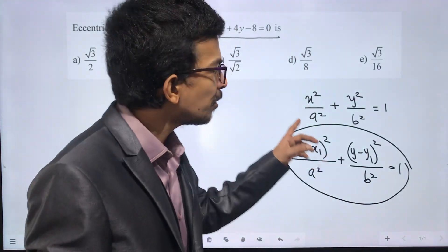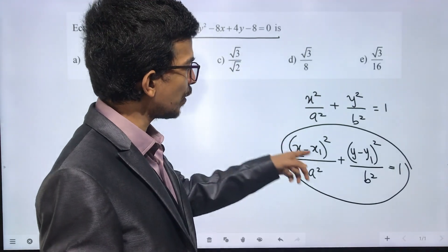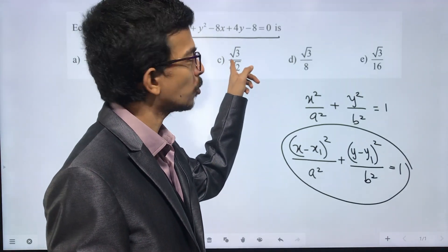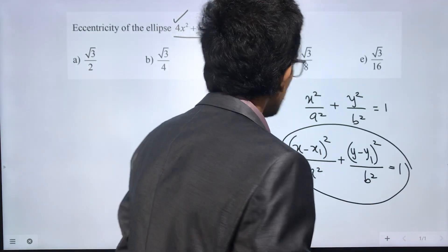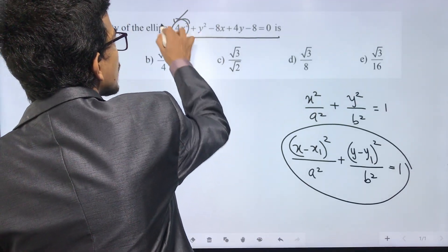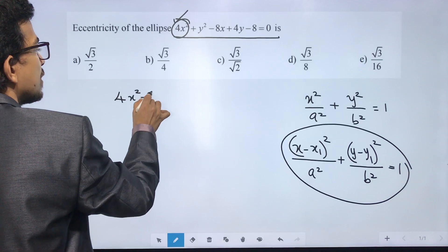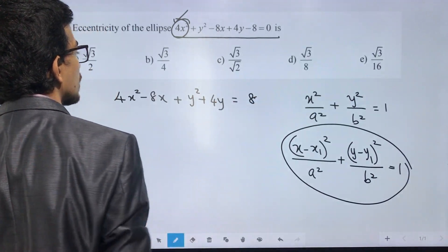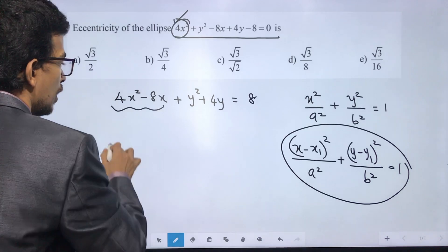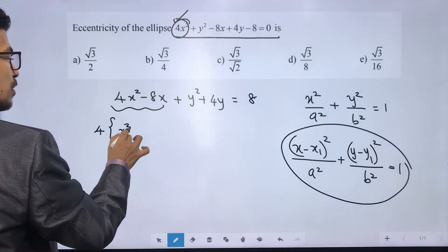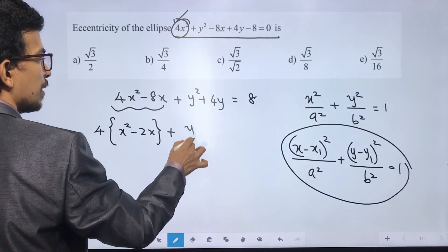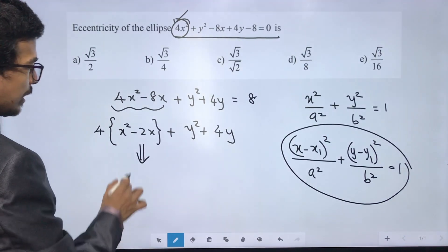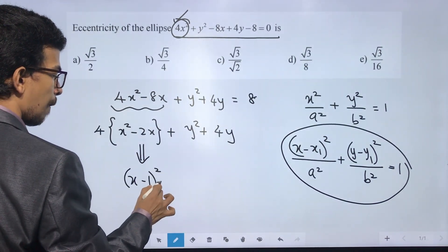We will complete the square. We have 4x squared minus 8x, plus y squared plus 4y, plus a constant term. This becomes 4 times (x squared minus 2x) plus (y squared plus 4y). Now x squared minus 2x becomes (x minus 1) whole square minus 1.